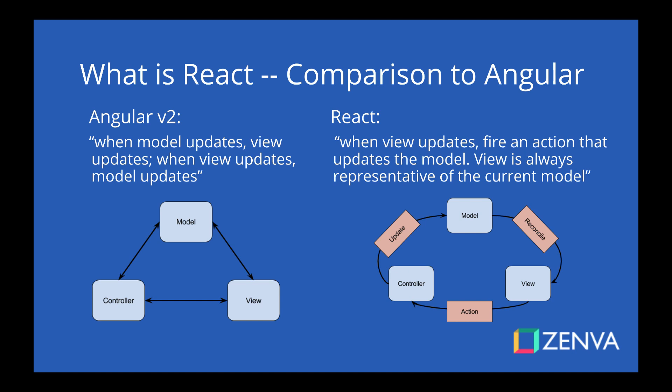With React, it's actually one way. So when you update something in the view — if you type something, if you click on a menu item — it actually dispatches something called an action. And then the action tells the model to update. Whenever the model updates, since all of our user interfaces are data-driven, the view updates based on the model. If that doesn't really make much sense, we'll get more into the weeds a little bit later. But that is how React works in a nutshell — there's no two-way data binding.